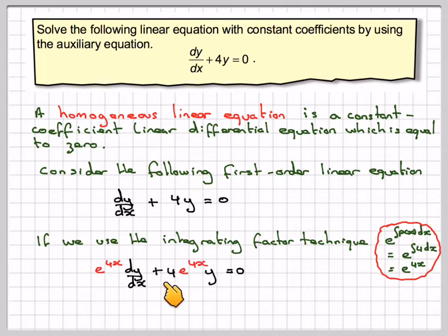So get e to the 4x dy by dx plus 4e to the 4xy is equal to 0. This comes down to d dx of e to the 4x times y using the product rule in reverse is equal to 0.